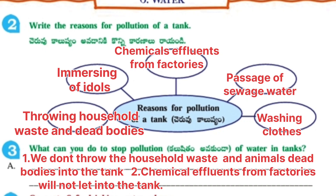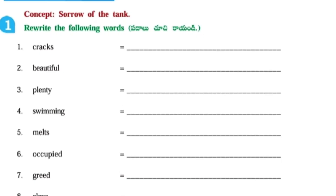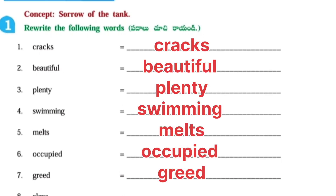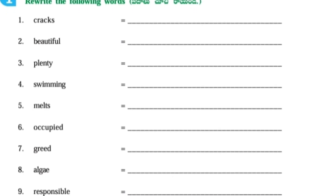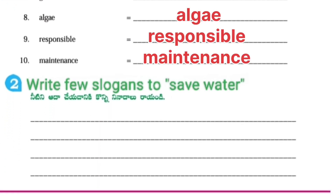Next Worksheet No. 3, Concept: Sources of a Tank, Tank Management. Glossary words: Cracks, Beautiful, Plenty, Swimming, Melts, Needs, Occupied, Greed, Responsible, Maintenance.